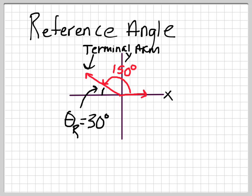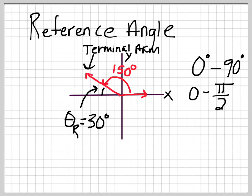Some important things you need to know about a reference angle: it's always between 0 and 90 degrees — or if you're in radians, between 0 and pi over 2. It's always positive. So if you get a reference angle that's not in that range, you really need to think about whether it's between the x-axis and the terminal arm.